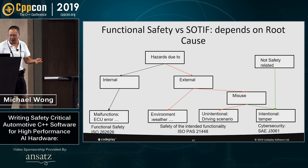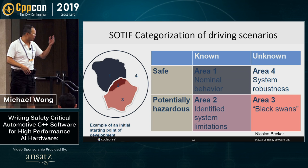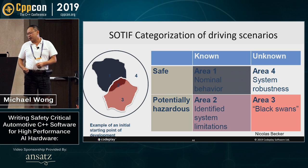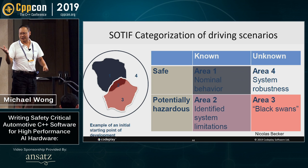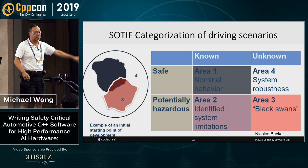SOTIF basically categorizes driving scenarios into four areas. Area one: something that is known to be safe. Area two: something that is known to be hazardous. Then the unknowns — area three: something you didn't know but was safe (a false positive) — your system is robust and handles it. And then finally area four: the black swan — something you didn't know is unsafe.